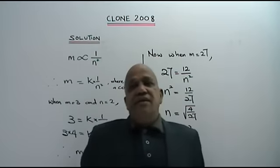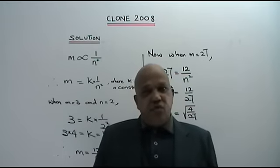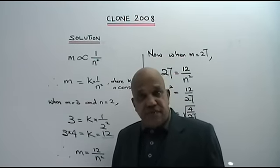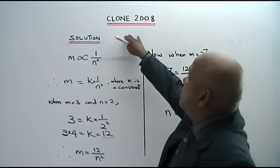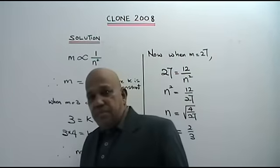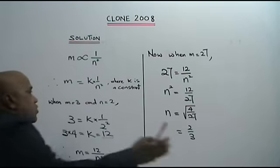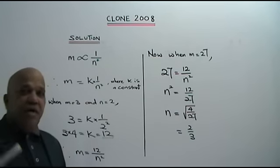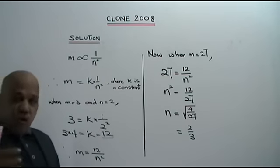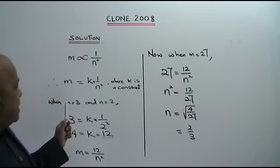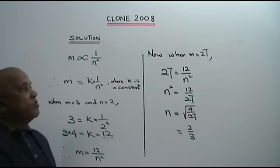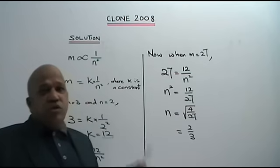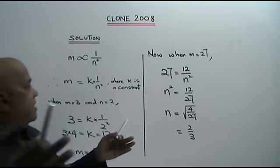Hi, welcome to another clone question based on inverse variation. Here I have for you a clone question based on the year 2008, paper 1, SPM. You are given that M varies inversely as N squared, and you are also given that when M equals to 3, M equals to 2. You are asked to find the value of N when M equals to 27. Let's see how this is done.